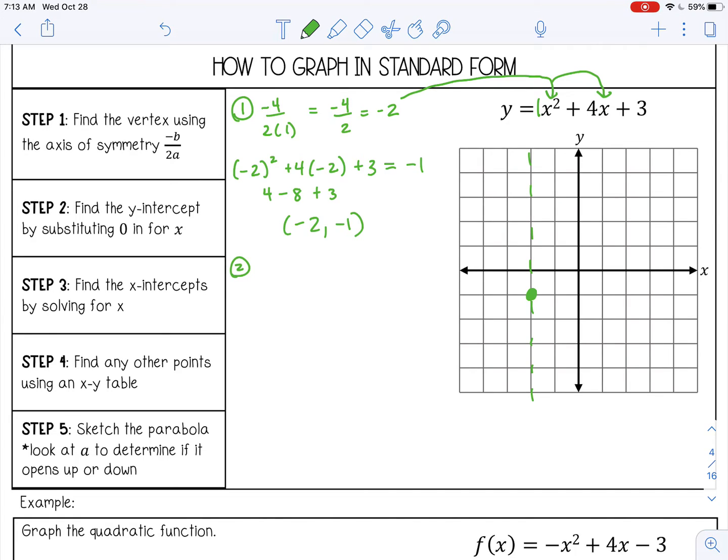Step 2. We're going to find the y-intercept by substituting 0 in for x. So 0 squared is 0. 4 times 0 is 0, so all we have left is 3. That means it's going to cross the y-axis at 3.